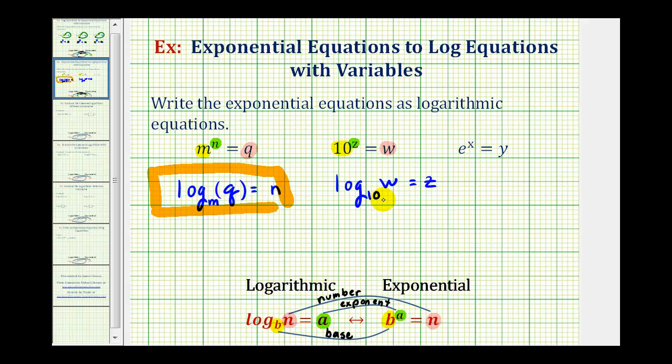Just to double check this, we have 10 raised to the power of Z equals W, so this is correct. And because we have log base 10, this is common log, so the base of 10 is not needed. We can write this as the common log of W equals Z.